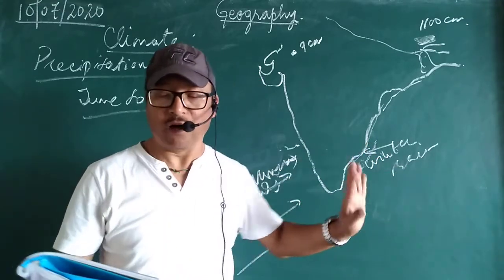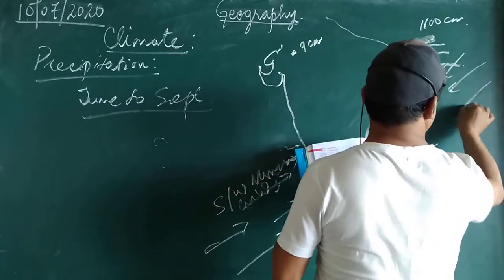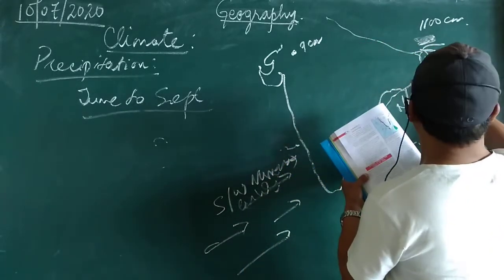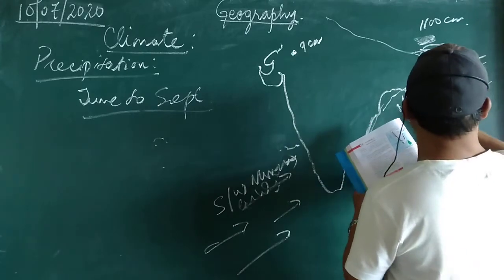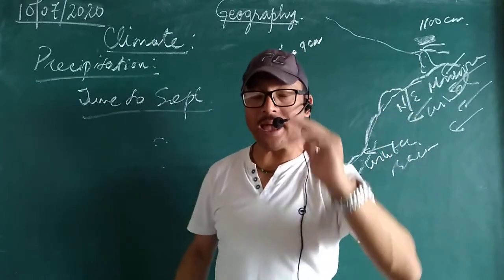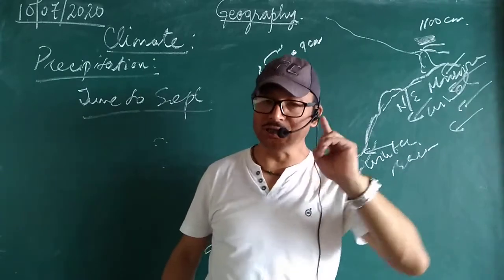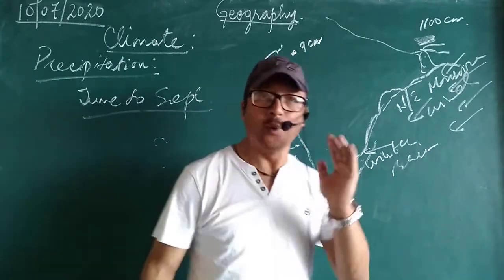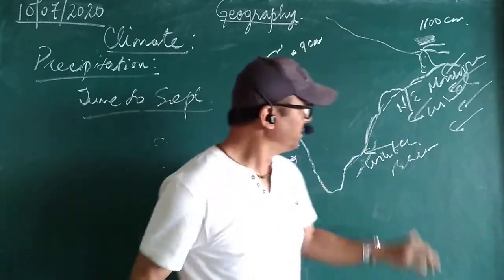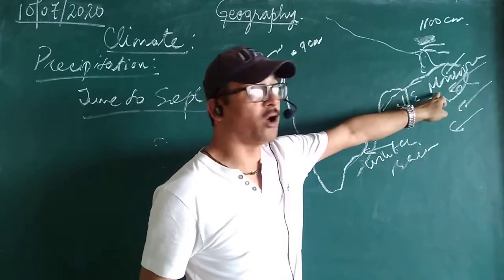The Southwest Monsoon brings rainfall around June, July, August. Now, coming to the point of the Coromandel Coast — Tamil Nadu Coast is the only coast in India which receives rainfall during the winter season. During the winter months, this Coromandel Coast or Tamil Nadu Coast will receive rainfall from the Northeast Monsoon. But the Northeast Monsoon winds are dry winds — how does a dry wind bring rain?